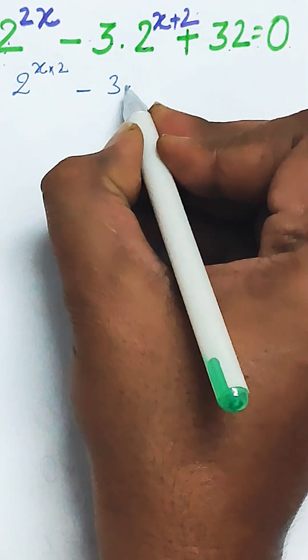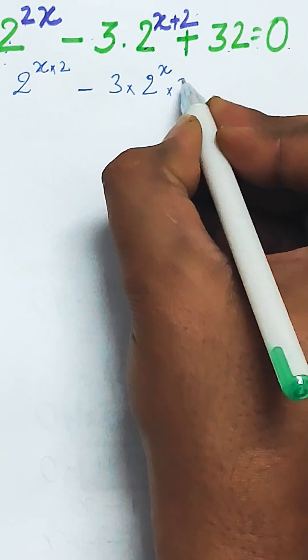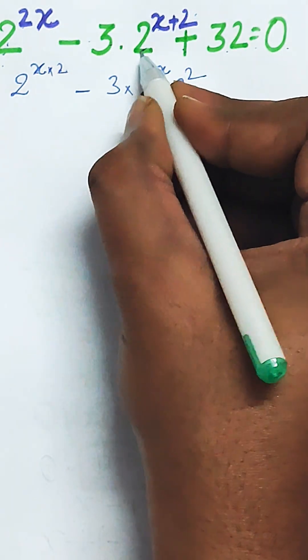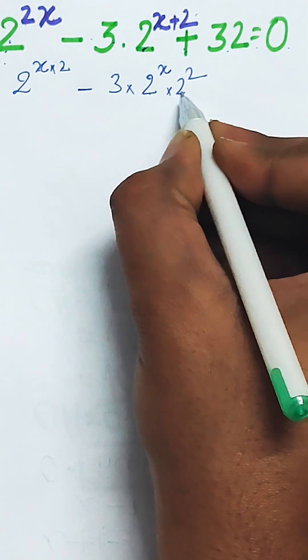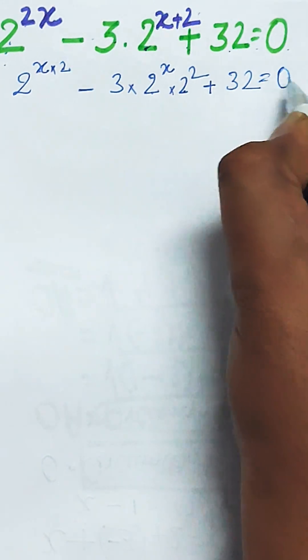Minus 3 multiplied by 2 to the power x into 2 to the power 2, because x plus 2, the base is same, so this can be split like this. Plus 32 as equal to 0.